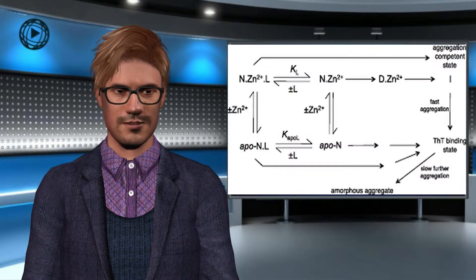Welcome to Widiapedia, the world's first video encyclopedia. The state of aggregation is a physical state in which substances can be found, depending on various combinations of temperature and pressure.